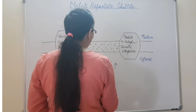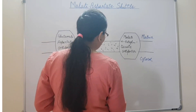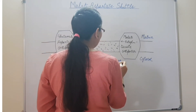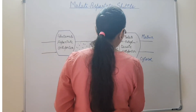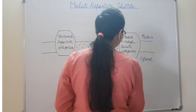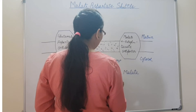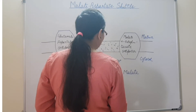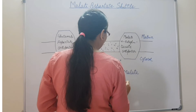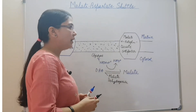In the cytosol, oxaloacetate is also present. It takes the reducing equivalent of NADH, and NADH is oxidized to NAD+, which can be used again. Oxaloacetate is reduced to malate. This reaction is catalyzed by the malate dehydrogenase enzyme present in the cytosol, so it is known as the cytosolic malate dehydrogenase.